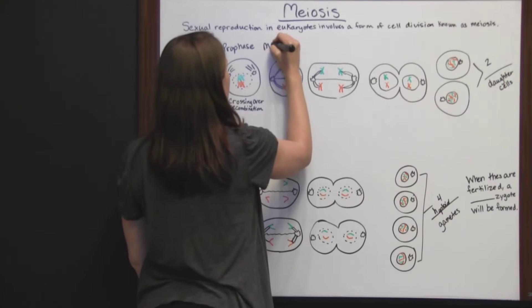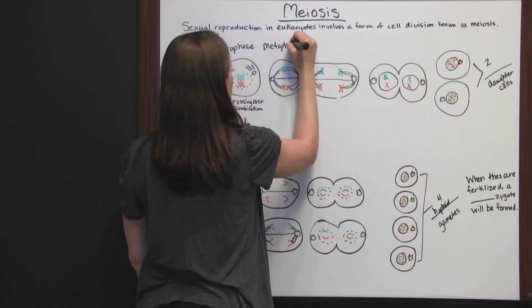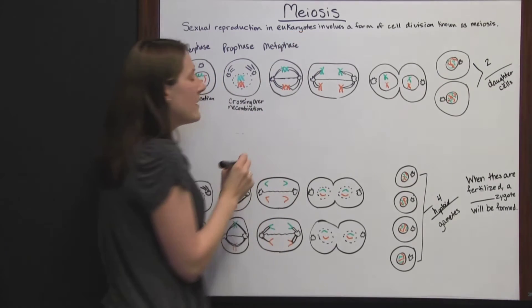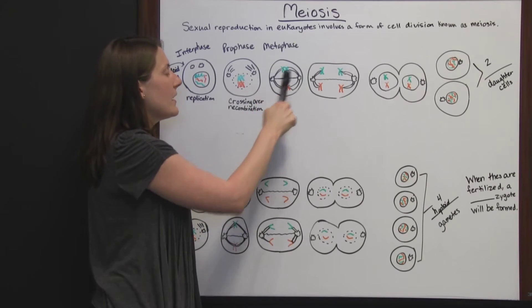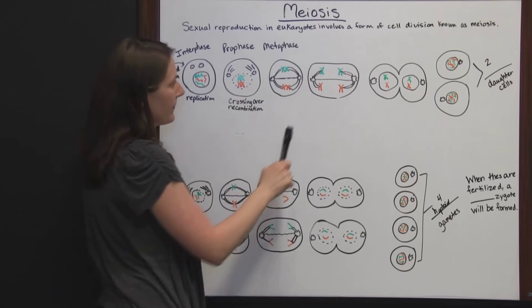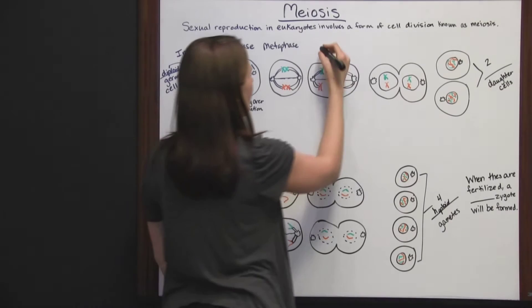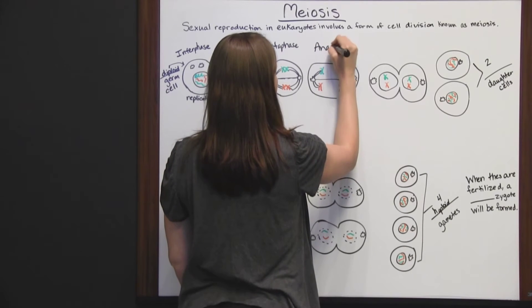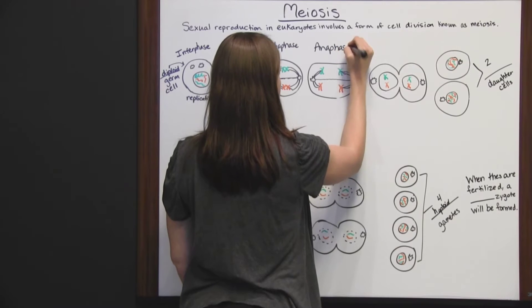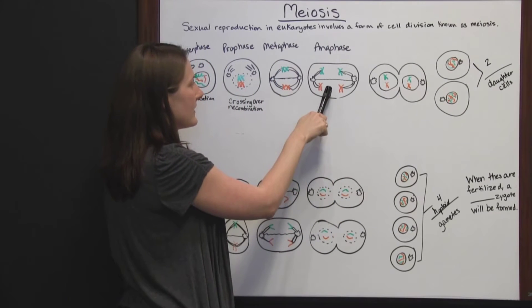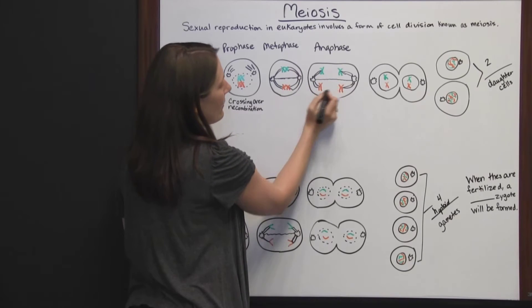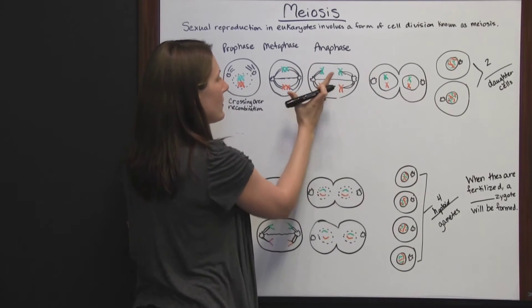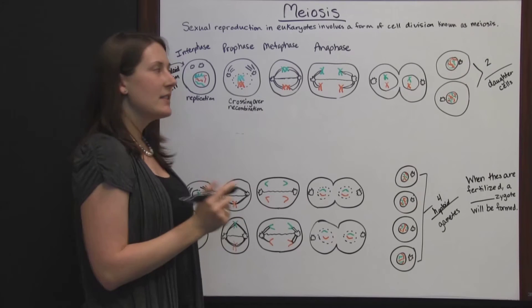Then in metaphase I, the centrosomes start pulling the homologous pairs apart. Moving to anaphase I, they get pulled further apart. They're no longer crossing over and are moving to opposite sides of the cell.